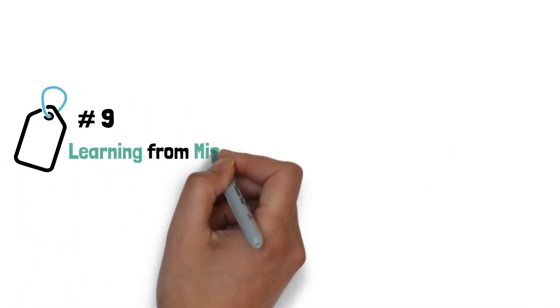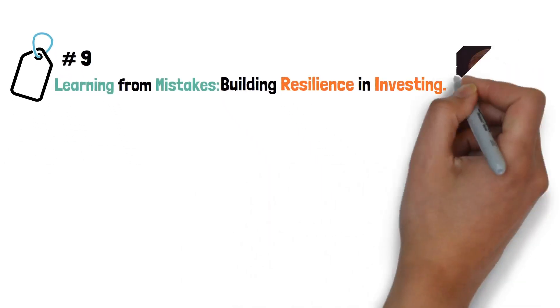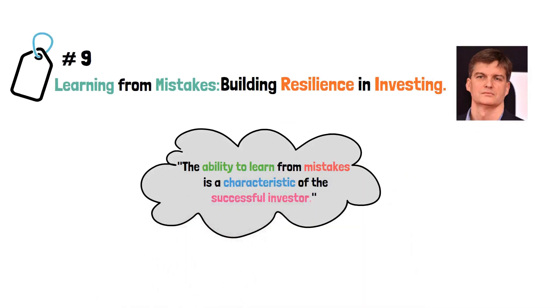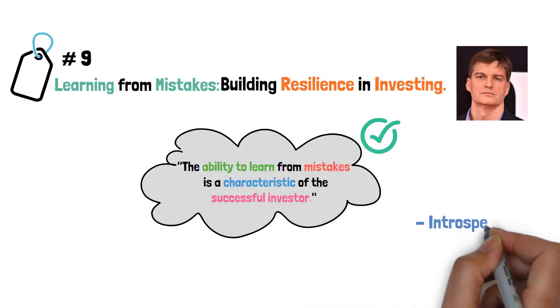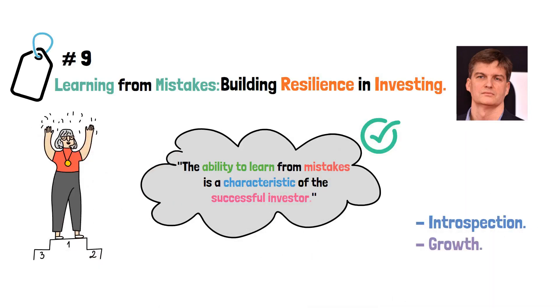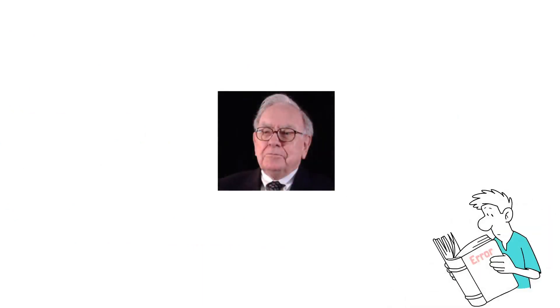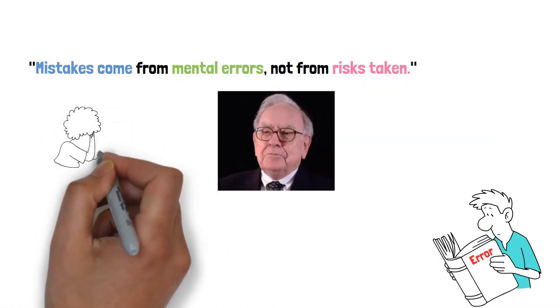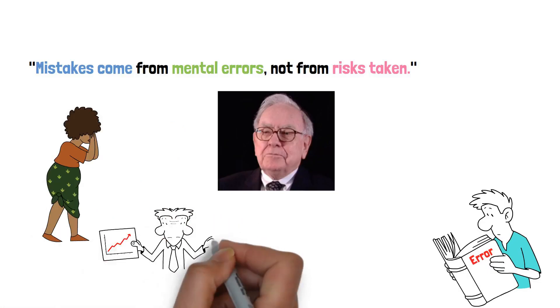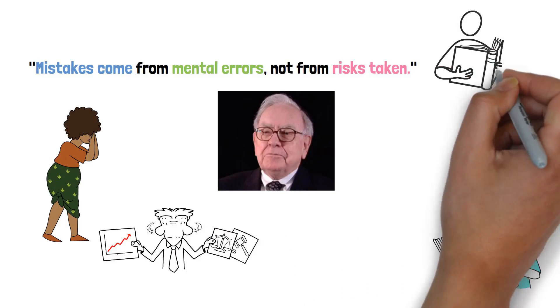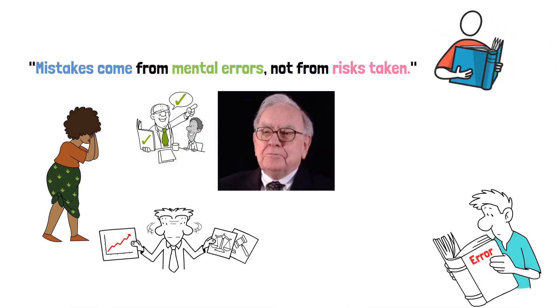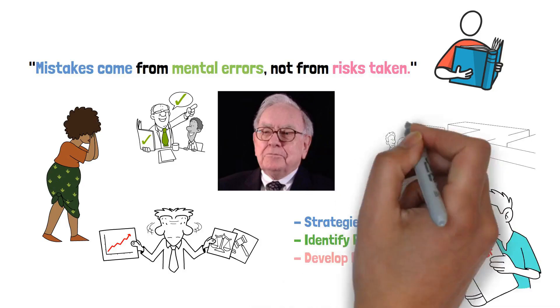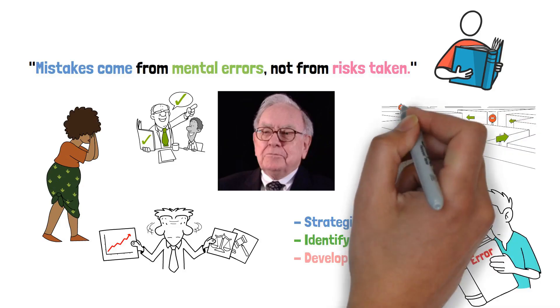Tip number 9: Learning from mistakes, Building resilience in investing. As Michael Burry wisely stated, the ability to learn from mistakes is a characteristic of the successful investor. This quote emphasizes the importance of introspection and growth derived from past experiences. Famous investor Warren Buffett also emphasized the value of learning from errors saying, mistakes come from mental errors, not from risks taken. This quote underscores the significance of understanding and analyzing mistakes to improve decision-making. By embracing mistakes as learning opportunities, investors can refine their strategies, identify pitfalls, and develop resilience. Ultimately, the path to investment success is paved with the lessons learned from the mistakes made along the way.